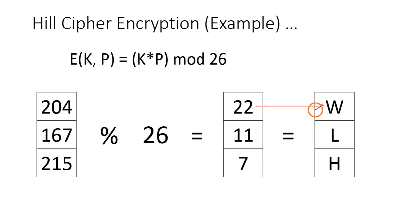Finally, when you convert this 22 into the letter in English alphabet from 0 to 25, you will get W for 22, L for 11, and H for 7. The final cipher text that is sent through the internet is WLH. This is how Hill cipher encryption works.